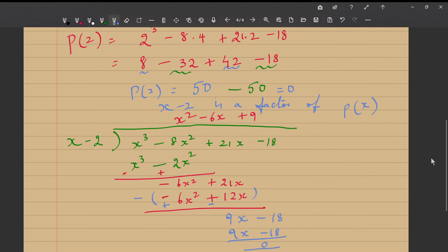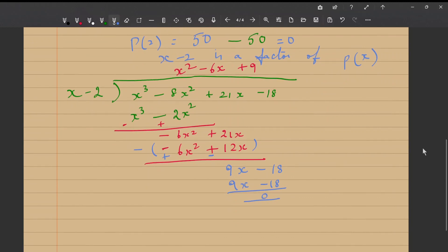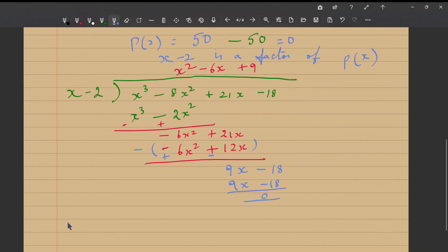So x² - 6x + 9 is a factor. Our P(x) can be expressed as a multiple of x - 2 into x² - 6x + 9. Now, we can further find the factors of x² - 6x + 9. One look at it would tell you that it is in the form a² - 2ab + b².